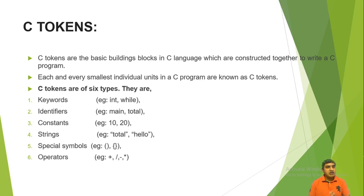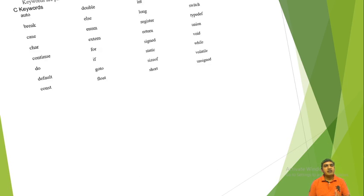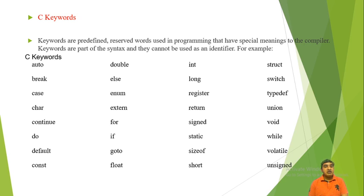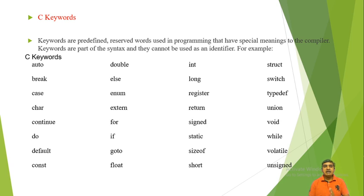Keywords are predefined reserved words used in programming that have special meaning to the compiler. Keywords are part of the syntax and they cannot be used as identifiers. Examples include: auto, break, continue, do, default, const, double, else, enum, extern, for, if, goto.